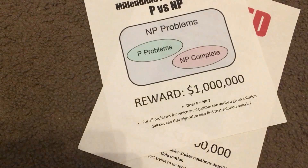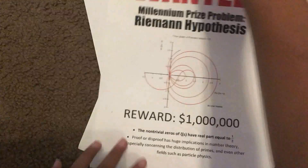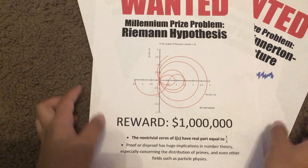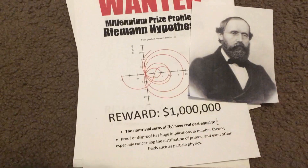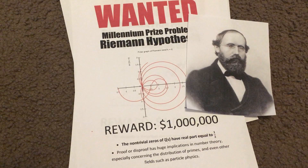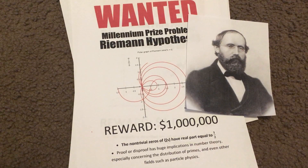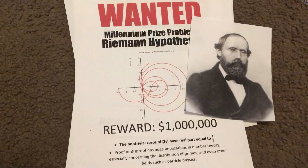Nonetheless, there is a bounty of a million dollars for anyone who can either prove the Riemann hypothesis mathematically, or just find that one rebellious zero. Doing either will have huge implications in number theory and also the distribution of prime numbers.